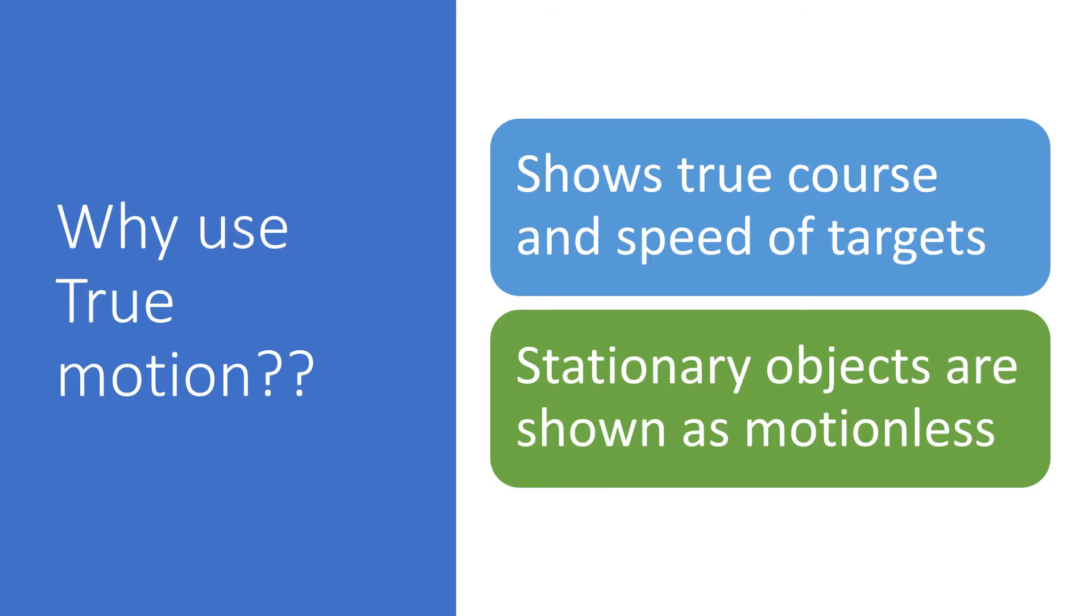So why should we use true motion? True motion has two basic advantages over relative motion. Firstly, it is capable of showing the true course and speed of the targets. Secondly, it displays stationary objects as being motionless on the radar screen, and thus buoys, land masses, and harbor details do not smear on your display as they do in relative motion.